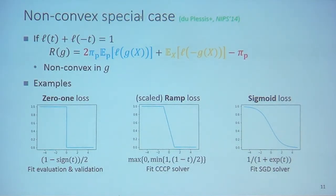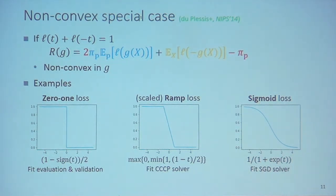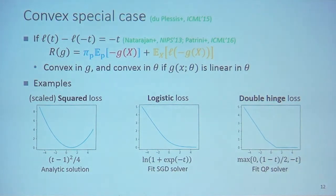In this field, many people assume they use zero-one loss to derive unbiased risk estimators, but then plug in a surrogate loss to train the classifier. We argue this is incorrect. We instead assume the loss function satisfies a condition shared with the zero-one loss and derive the unbiased risk estimator directly. Loss functions satisfying the non-convex condition include the ramp loss and sigmoid loss. We also find a convex special case based on the linear-odd condition: L(t) - L(-t) = -t.